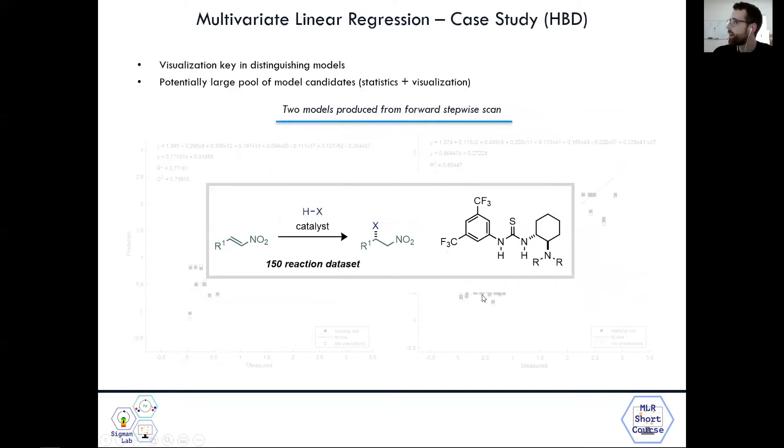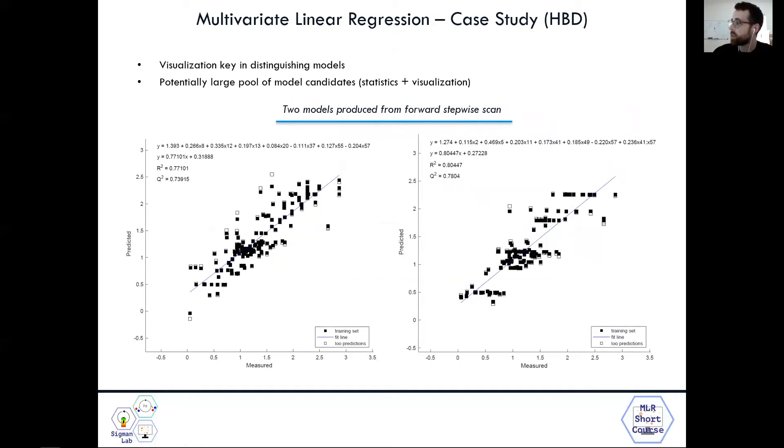So looking back at our thiourea, the bifunctional hydrogen bond donor catalysis case study, starting with the 150 reaction data set, we can look at two models that are produced from a forward stepwise scan. And one thing I'll note is the visualization is key in distinguishing models, especially when you have a large pool of model candidates with a lot of similar statistics. It helps a lot to visualize the different models and how they look and differ from one another. So these two you can see have pretty similar statistics. However, they look quite different.